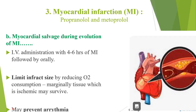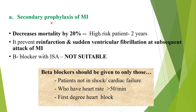In myocardial infarction: intravenous beta blocker administration within 4–6 hours followed by oral use may limit infarct size. Long-term use reduces mortality and reinfarction and may prevent arrhythmia. As secondary prophylaxis, beta blockers decrease mortality by 20% in high-risk patients over 2 years. Beta blockers without ISA are preferred. They should only be given to patients not in shock or cardiac failure, with heart rate above 50 per minute, and without first-degree or higher heart block.